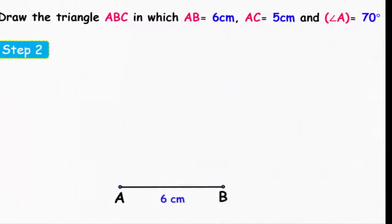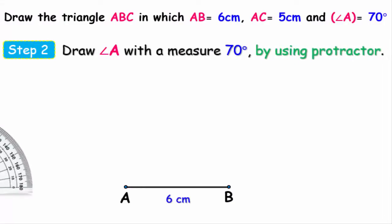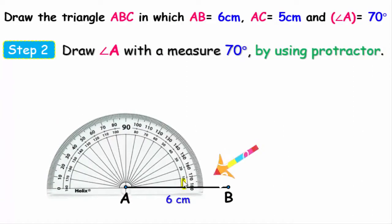The second step, by using the protractor, we'll draw an angle A whose measure is 70 degrees. That is by setting the center of the protractor on the point A like this. Then from the right side we start from zero degrees and get to 70 degrees.